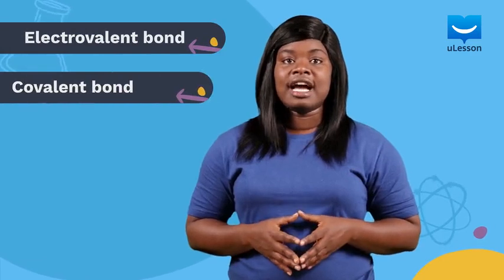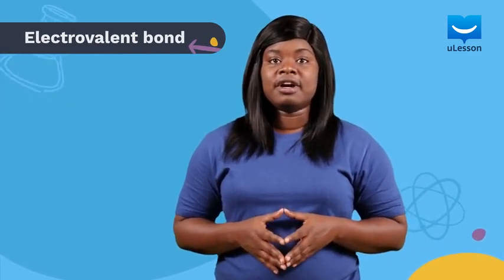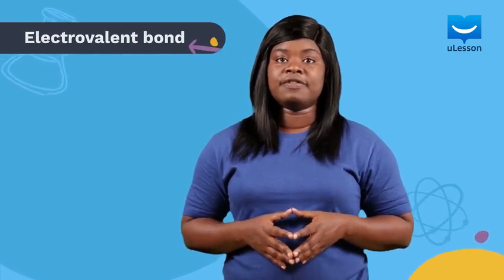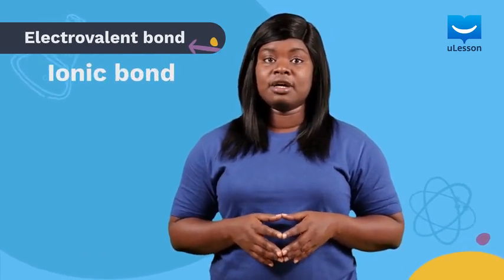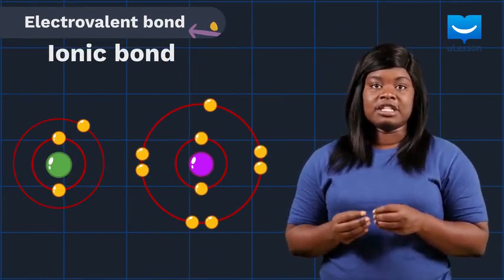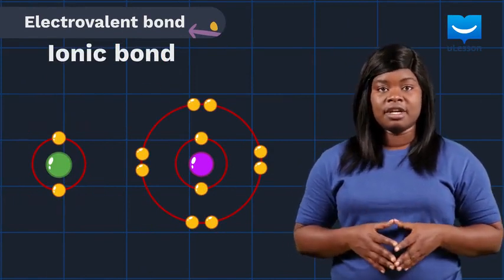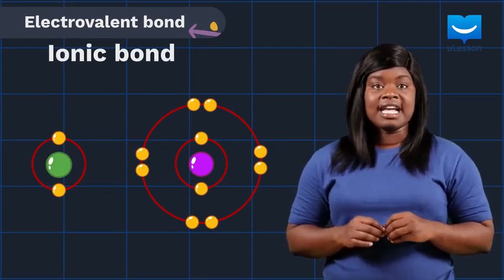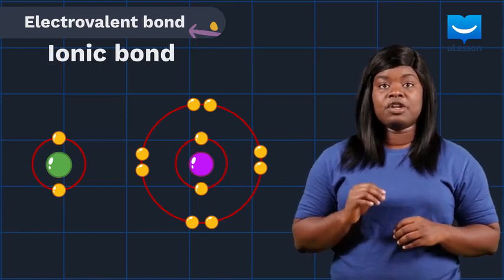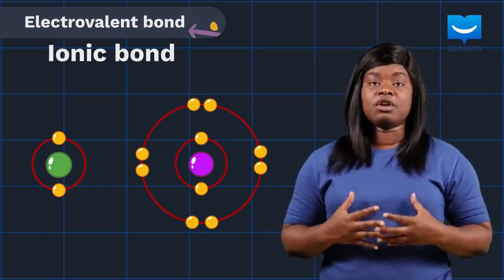There are two main types of chemical bonds: electrovalent and covalent bonds. Electrovalent bond is also sometimes referred to as ionic bond. It is a type of bond formed when an electron is transferred from one atom to another atom. It is referred to as an ionic bond because ions are formed during the formation of the bond.